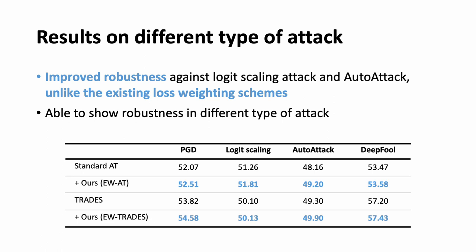We tested our approach against various types of attacks, including logic scaling attack and auto attack, and found that it did not show any weakened robustness as seen in previous reweighting methods. This leads us to believe that reweighting itself is not the problem, but that the reweighting equation needs to be carefully designed to prevent overfitting to certain types of attack.